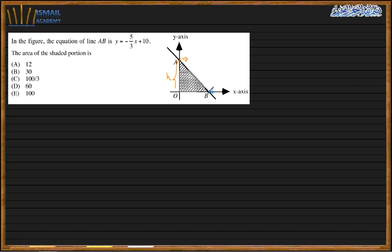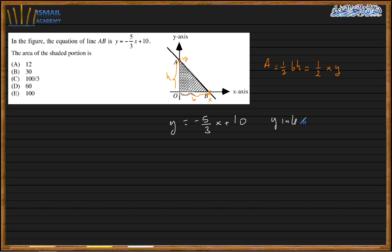The area of the triangle is half base times height, where the base is the x-intercept and the height is the y-intercept. The equation is y = -5/3·x + 10. To find the y-intercept, we set x = 0, which gives y = 10.